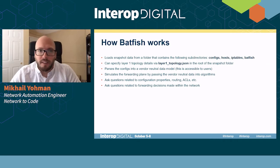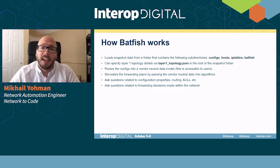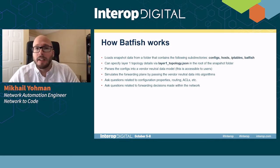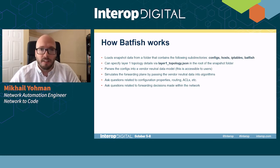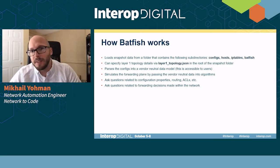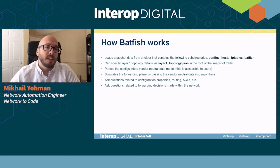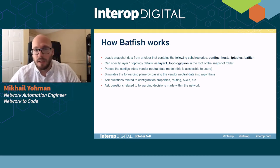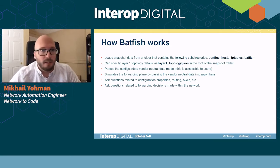To go into how it works, it's going to require a snapshot directory that has subfolders containing our network device configs, our hosts like Linux servers, and the IP tables from them. We can also specify layer one topology for data that Batfish can't glean from configurations. It basically parses those configurations into a vendor-neutral data model and then provides us questions we can ask against the data it gleaned, such as questions related to routing.